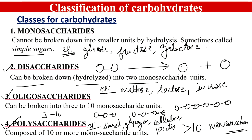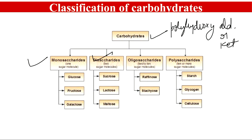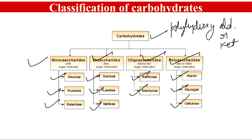Let's review what we've learned. Carbohydrates are polyhydroxy aldehydes or ketones, classified into monosaccharides, disaccharides, oligosaccharides, and polysaccharides. Monosaccharide examples include glucose, fructose, and galactose. Disaccharide examples are sucrose, lactose, and maltose. Oligosaccharide examples to memorize are raffinose and stachyose. For polysaccharides, we will look at starch, glycogen, and cellulose. In the next part, we will discuss monosaccharides in detail.